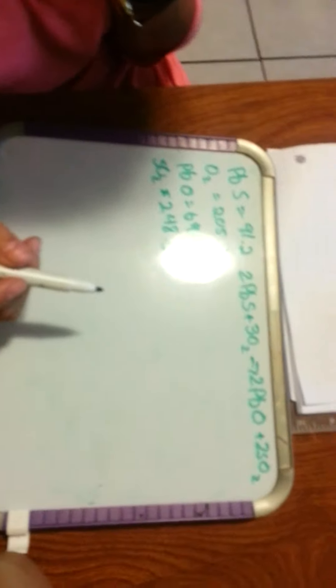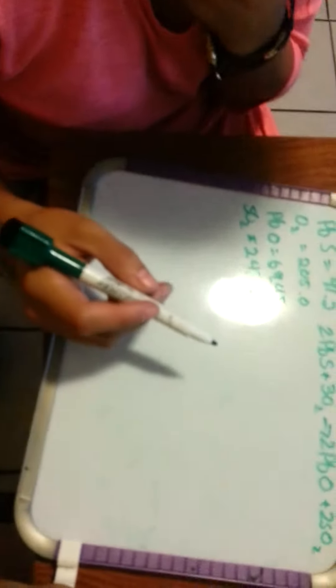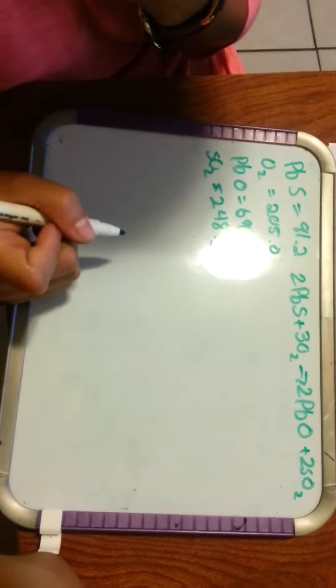Okay, so for question 158 it asks us to calculate change of S, which is our products minus our reactants.